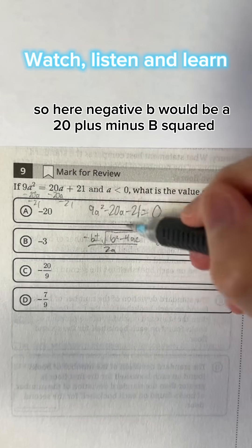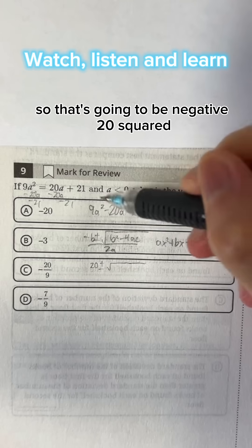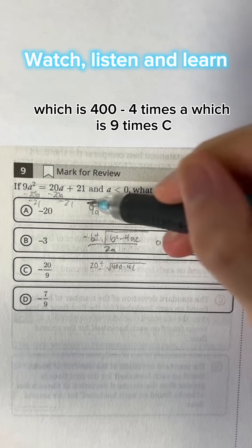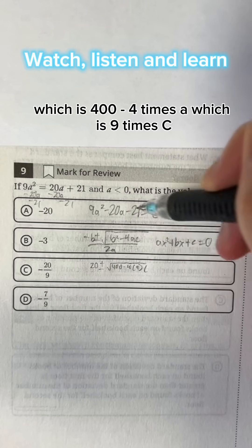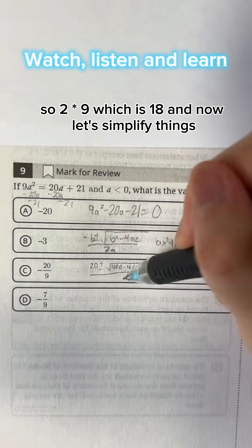So here negative b would be 20 plus minus b squared, so that's going to be negative 20 squared, which is 400 minus 4 times a, which is 9 times c, which is negative 21 over 2a, so 2 times 9, which is 18.